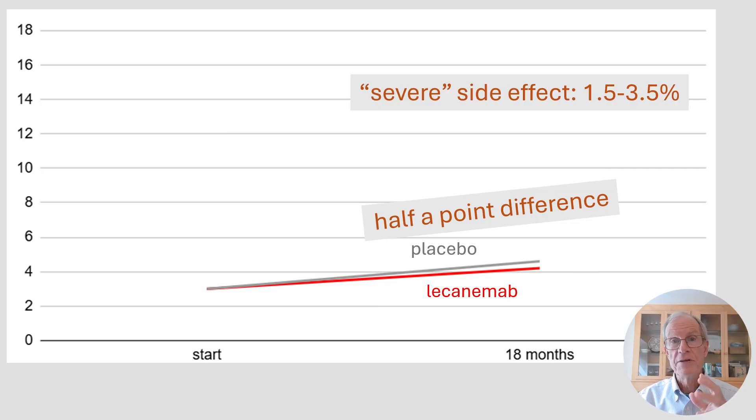In the meantime, they did observe an incidence of severe side effects, side effects that would involve worsening cognitive function, for example, in the various studies that have been done with these monoclonal antibodies, between one and a half and three and a half percent. So not a huge number, but a potential for getting worse.